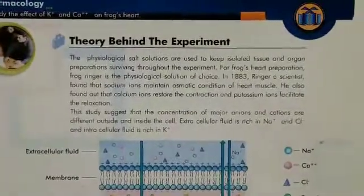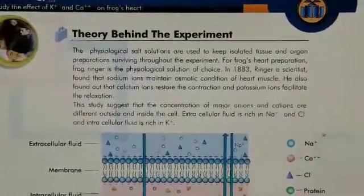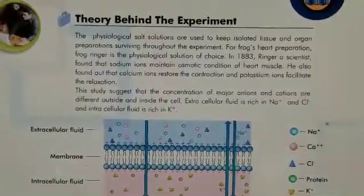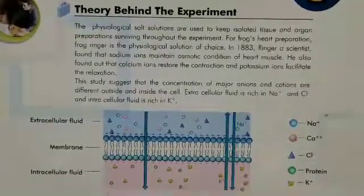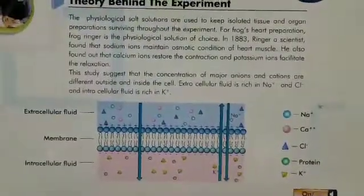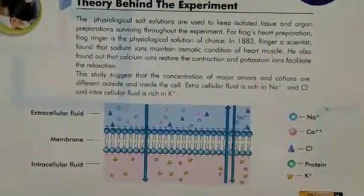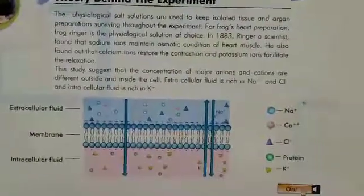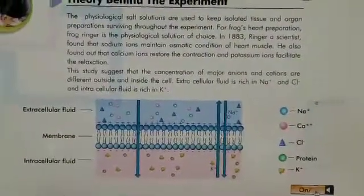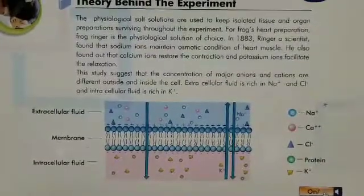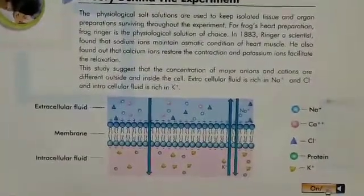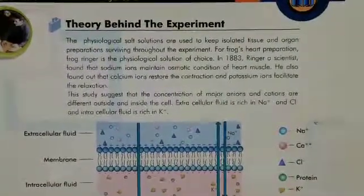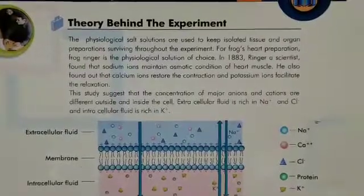For frog's heart preparation, Ringer's solution is the physiological solution of choice. In 1883, Ringer, a scientist, found that sodium ions maintain the osmotic condition of heart muscle. He also found that calcium ions restore contraction and potassium ions facilitate relaxation. The concentration of major ions differs outside and inside the cell — extracellular fluid is rich in sodium and chloride ions.